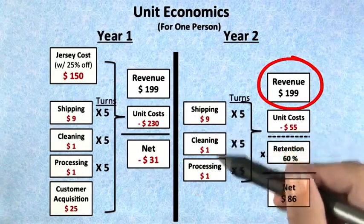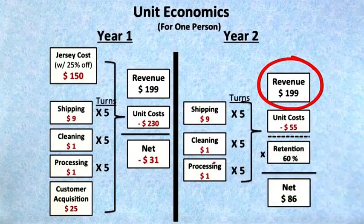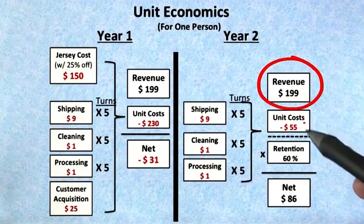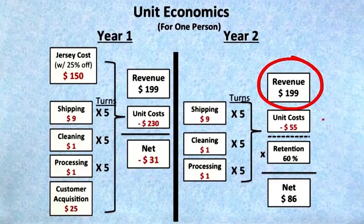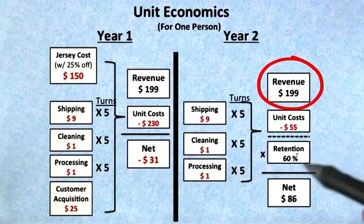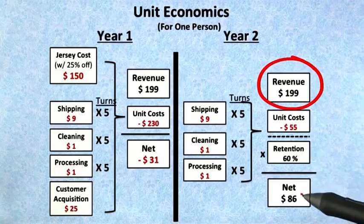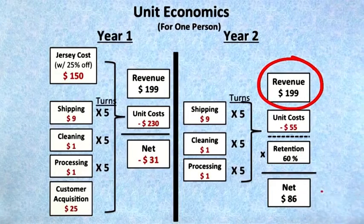You still have your shipping, cleaning, and processing costs, but your unit costs are now $55. And if you get 60% retention, your net for those customers who stay longer than a year is $86.